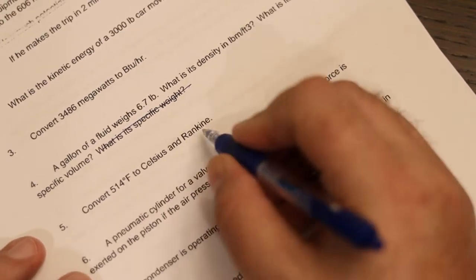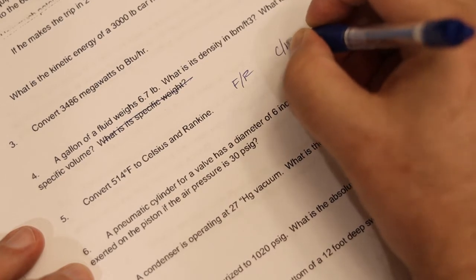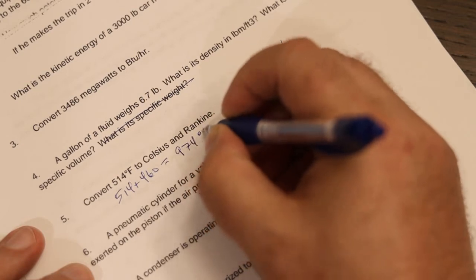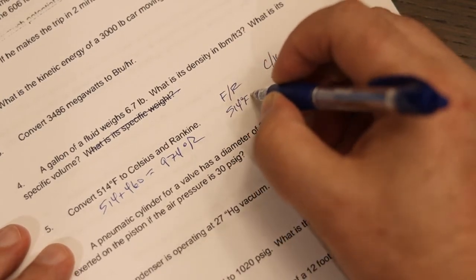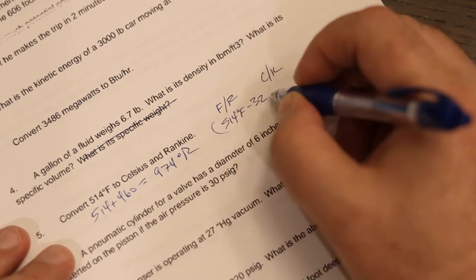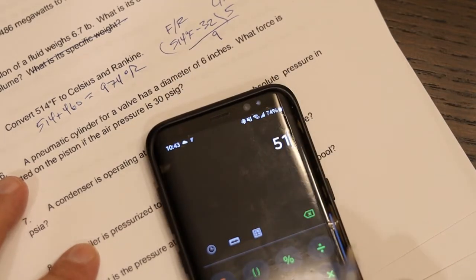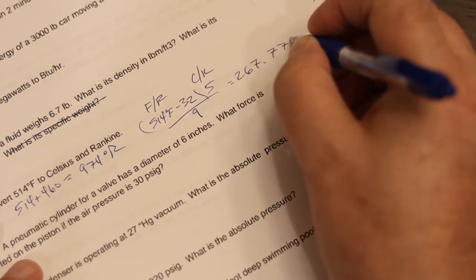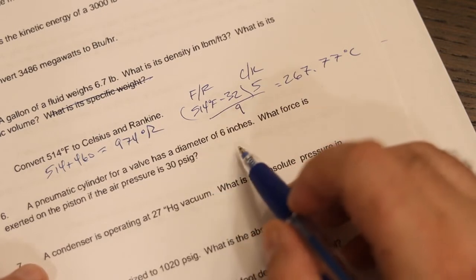Alright. 514 Fahrenheit to Celsius and Rankine. So the Celsius, or let's do the Rankine first, because Fahrenheit, right? Fahrenheit and Rankine go together. Celsius and Kelvin go together. So Fahrenheit, 514 plus 460, 974 degrees Rankine. Now Celsius, it's 514 degrees Fahrenheit minus 32 times 5 divided by 9. Not doing that one in my head. 514 minus 32 equals times 5 equals divided by 9 equals 267.77 degrees Celsius. Alright. And I wrote on that paper instead of this paper. Oh, well. Doesn't matter.